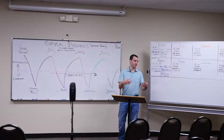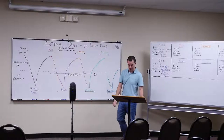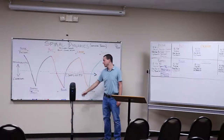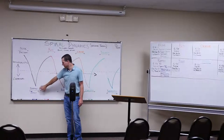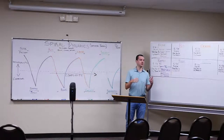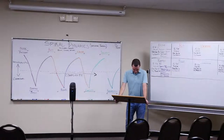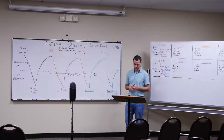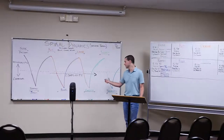You have a new perspective, but you can also move back and forth. It bounces back and forth from an individualistic to communal, back to individualistic to communal. The first week we covered the individualistic archaic, and then it bounces to a communal purple. This week we're bouncing back to red and then back to blue. The complexity grows as you go along.